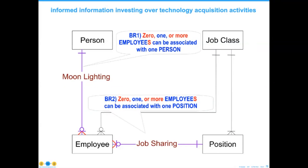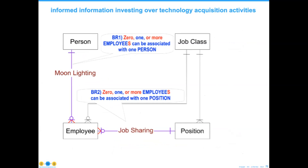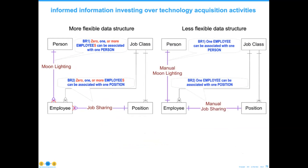Same thing with job sharing — I could have somebody who could work Monday, Wednesday, and Friday and share that job with a Tuesday and Thursday position. Or work up until lunch and somebody else after lunch. Hopefully you see the flexibility that has been built into the second data model. The more flexible one is on the left; the less flexible one is on the right. Neither one of them is correct because we don't have all of the requirements — any data model is always incomplete without the definitions as well.